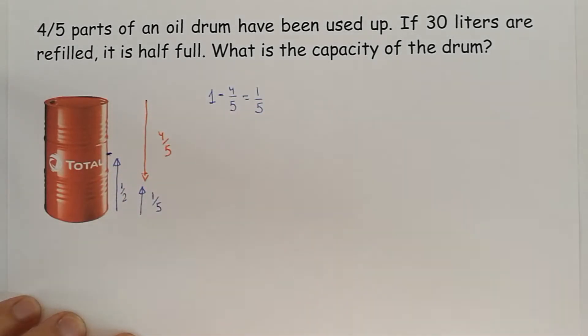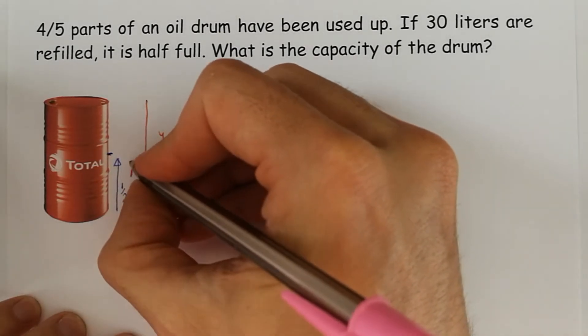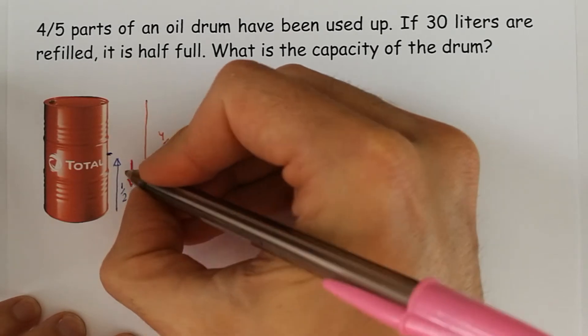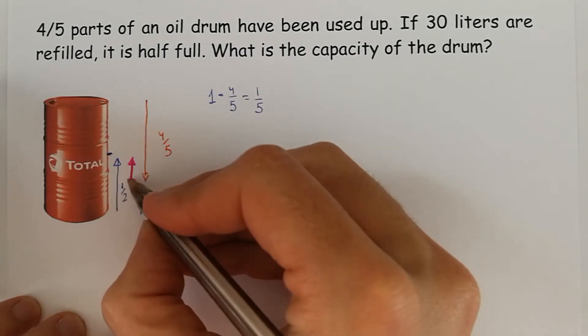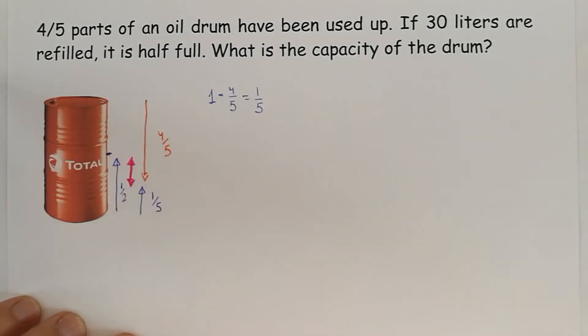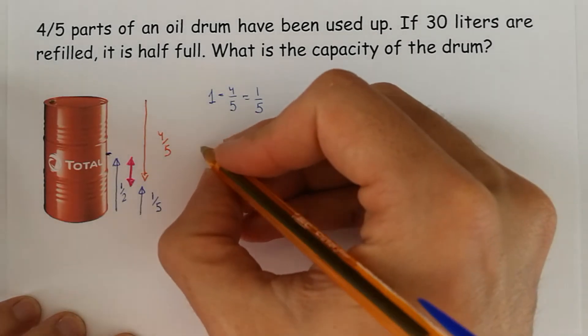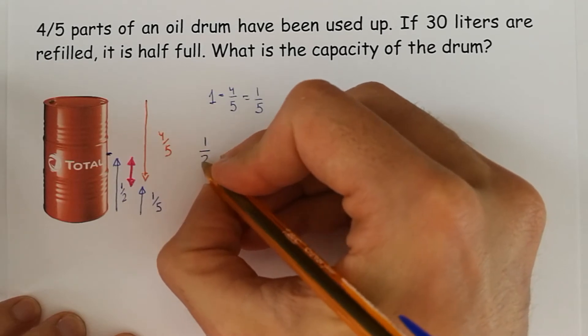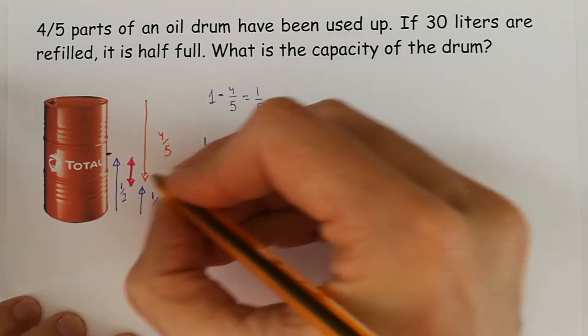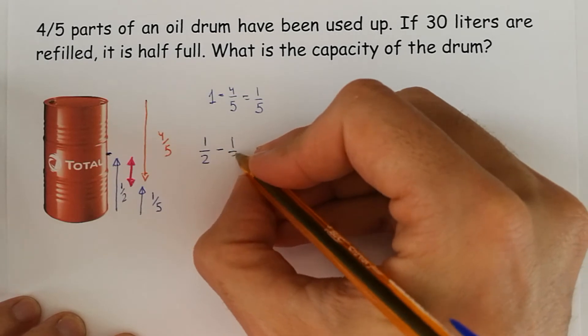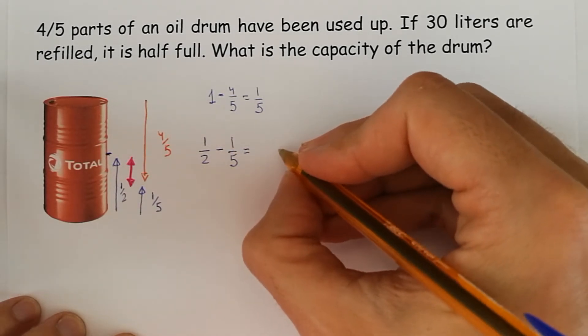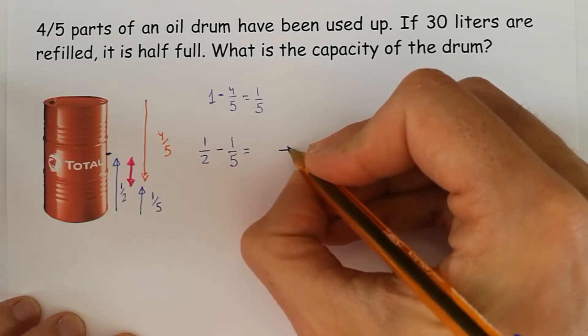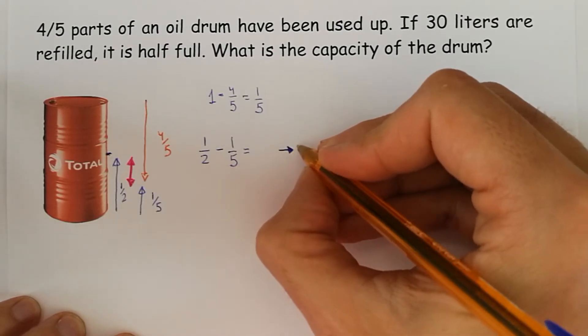So, this distance in the middle is 30 liters. Let's see, what's the difference with fractions? We find the difference with fractions, one-half minus one-fifth. And the fraction that we get is going to be the same as these 30 liters.